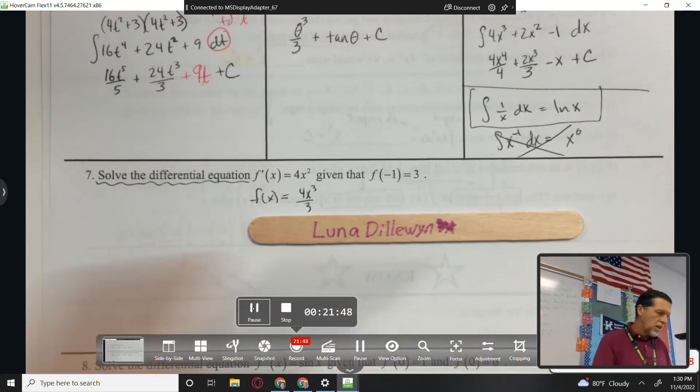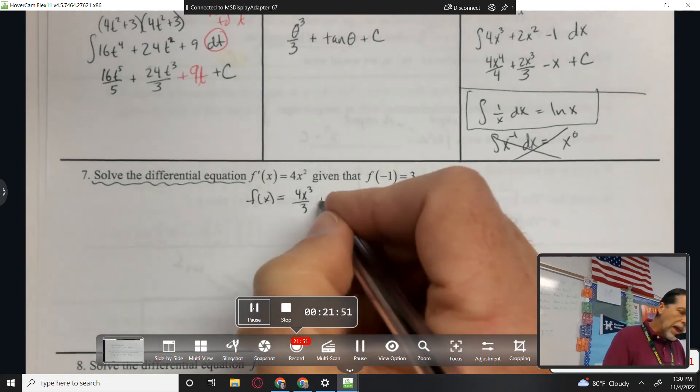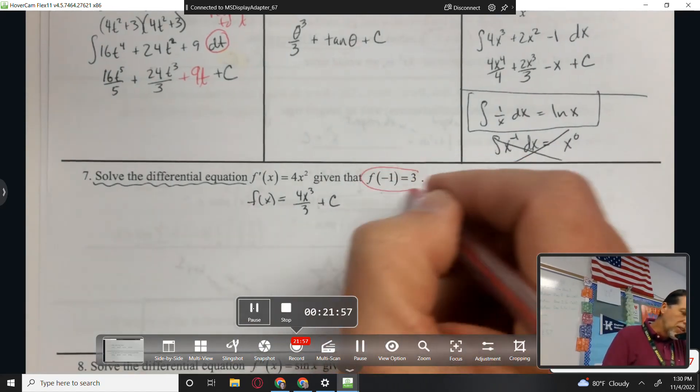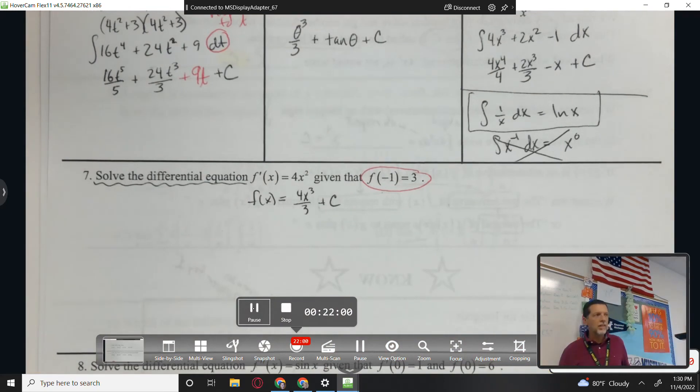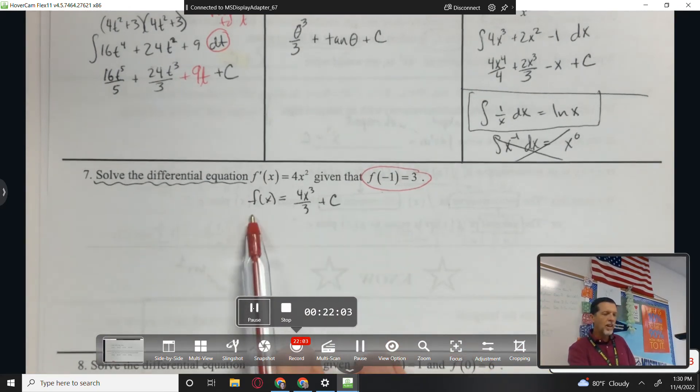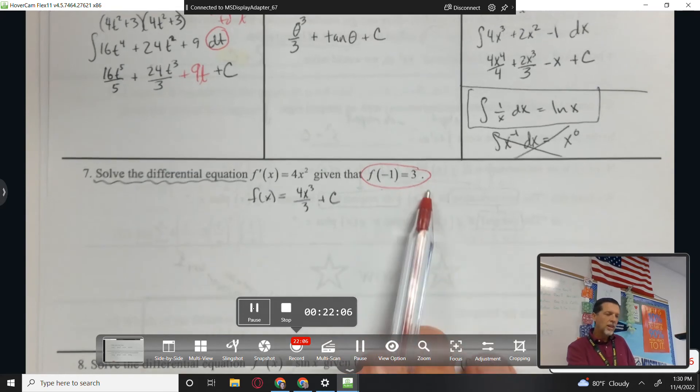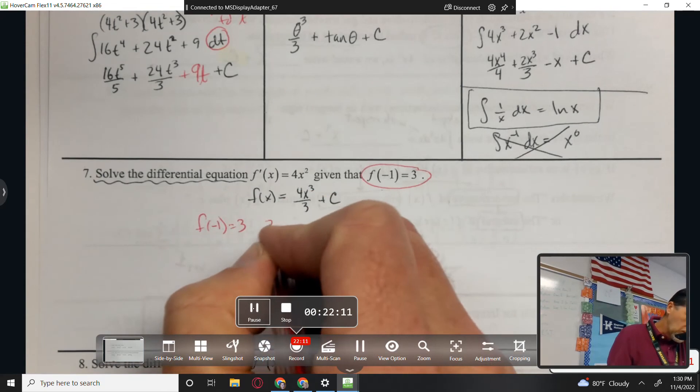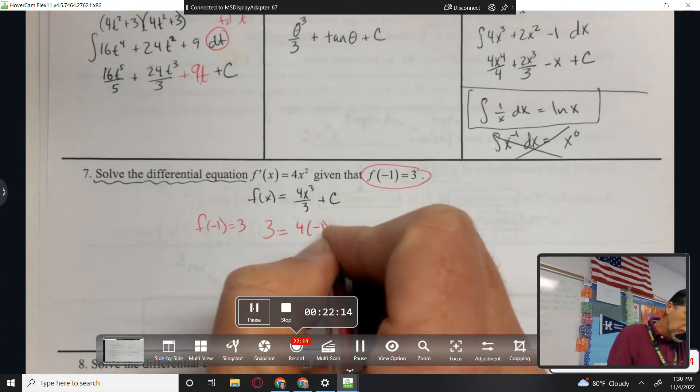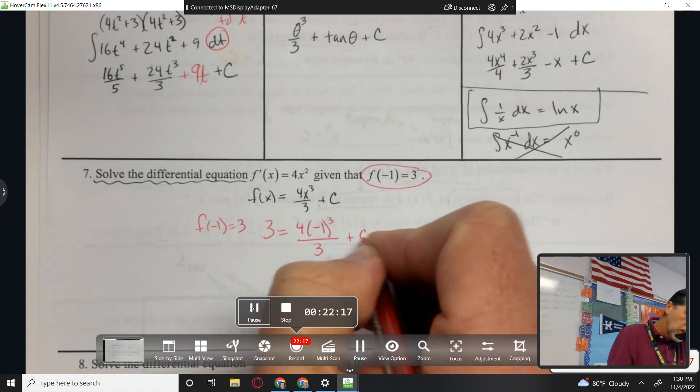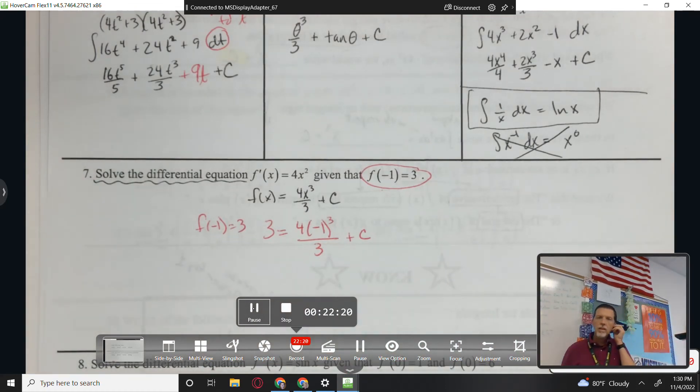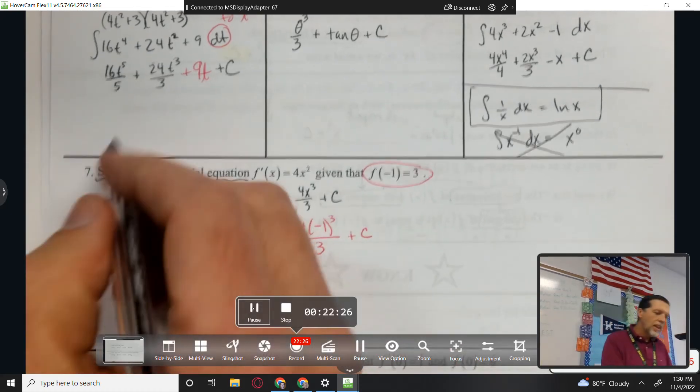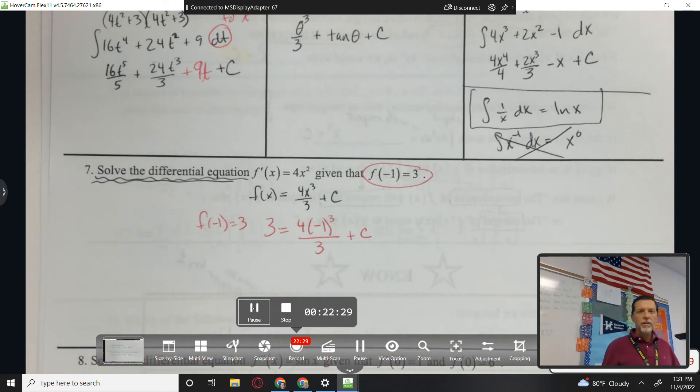4x cubed over 3 plus c. Plus c. That plus c is what's important here, because they gave us some information that we can use to figure out what c is. So this information says, if we take the function and we plug in negative 1, we should get 3. So 3 equals 4 times negative 1 cubed over 3 plus c. So they gave us some information to figure out what c is. That's the solve the differential equation part. We're going to find what equation this came from.